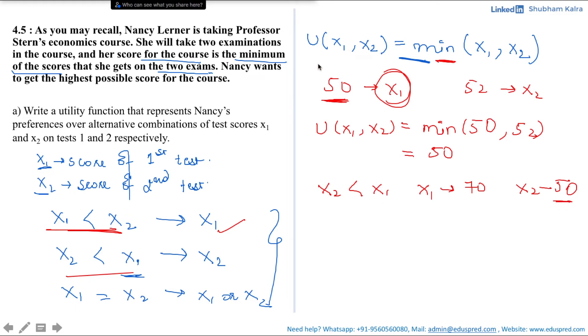Again, substituting the value into this function, we would get U(X1, X2) equals minimum of X1, X2, and X1 in this case is 70 and X2 is 50. The minimum of 70 and 50 is 50. Thus, the answer would be 50. So this condition is also satisfied.